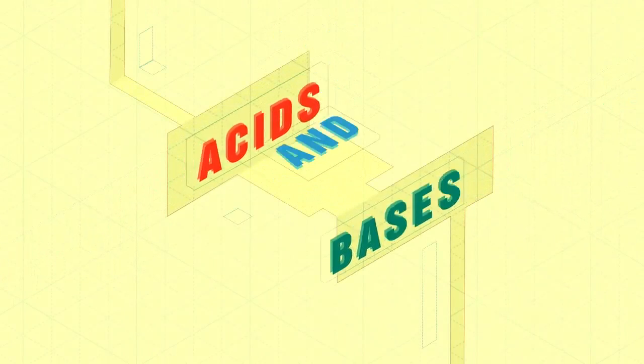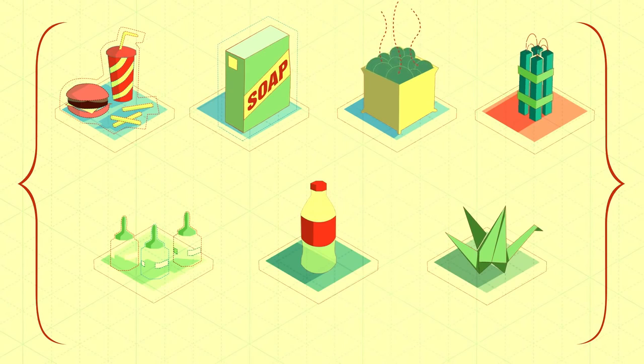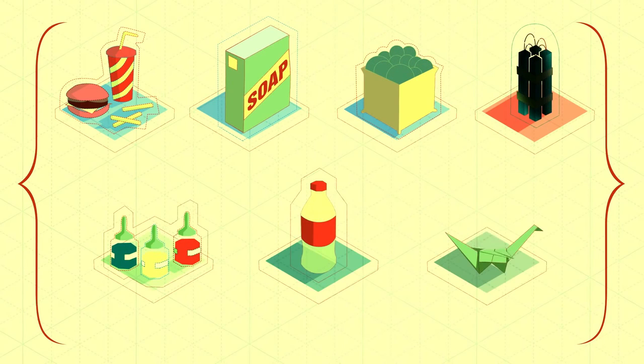Acids and bases are everywhere. They're used to make foods, soaps and detergents, fertilizers, explosives, dyes, plastics, pesticides, even paper.